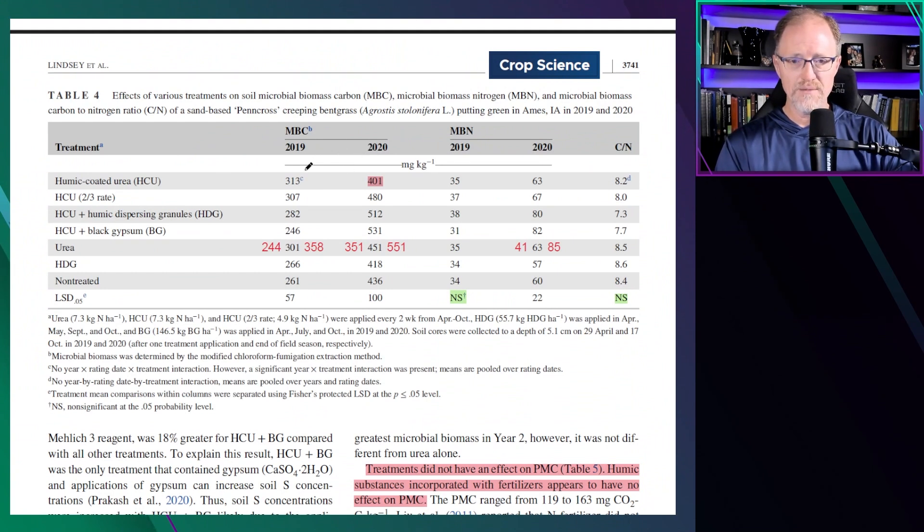The microbial biomass that they had in the objectives, there was no increase or decrease from these products compared to straight urea. You'll see here that I put in the least significant difference above and below the urea. There was no treatment that increased it from urea in terms of microbial biomass carbon in 2019 or 2020. There was no product that resulted in any change in microbial biomass nitrogen in 2019 at all. In 2020, compared to urea, there was no treatment that resulted in an increase in microbial biomass nitrogen.